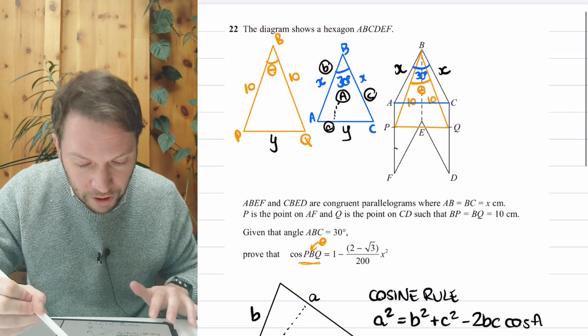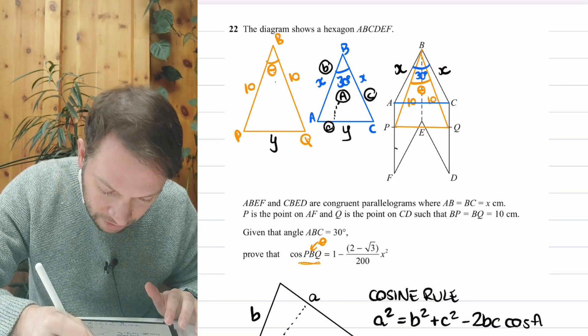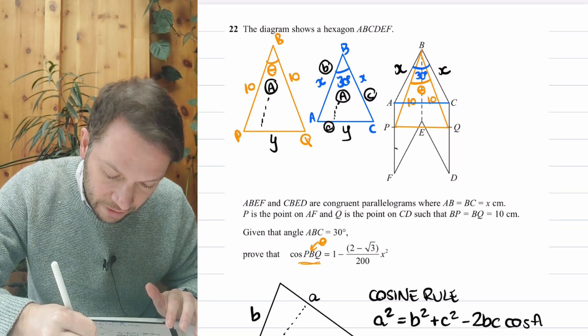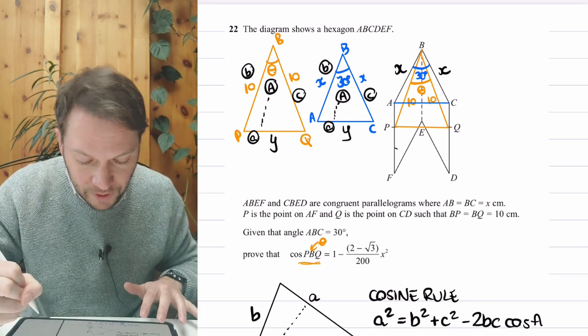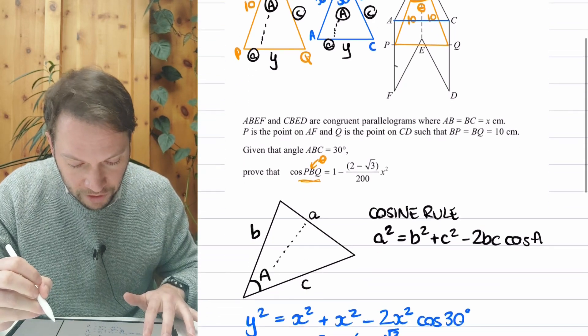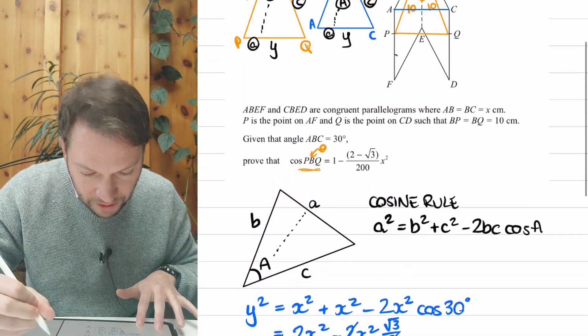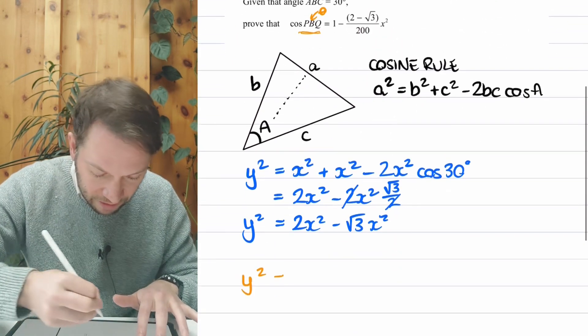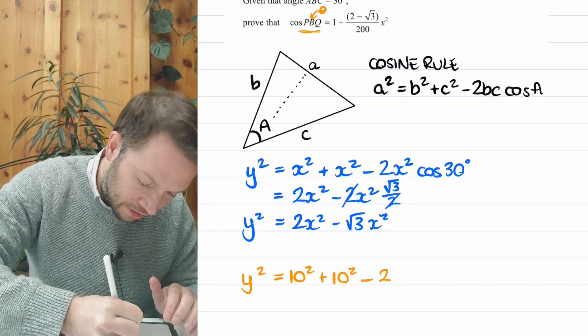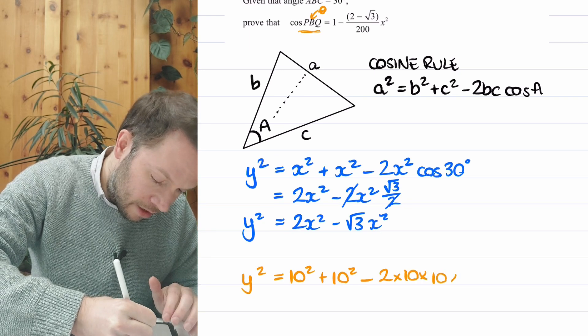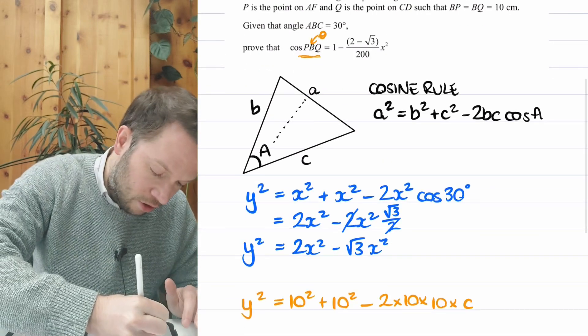Now, if we use it on the other triangle, the orange triangle we've got here, let's do it again, label the sides and angles. So this is the angle capital A, which means this is the side lowercase a. And the other two sides are B and C. So I'm now going to apply the cosine rule to this other triangle. So we're going to get Y squared. So that's A squared equals B squared plus C squared. So 10 squared plus 10 squared minus 2BC.